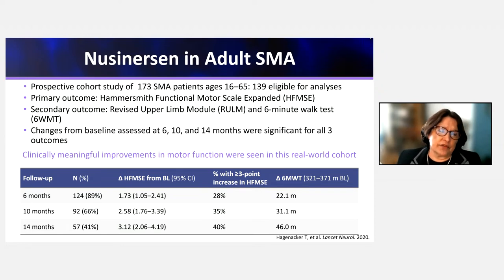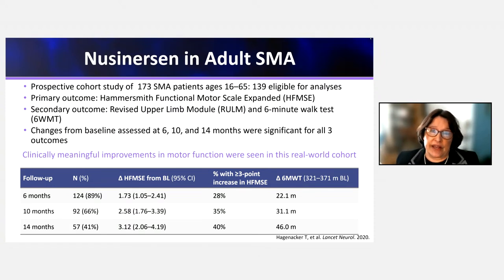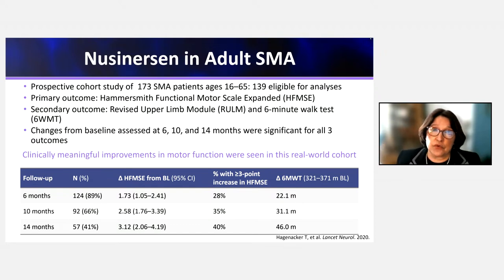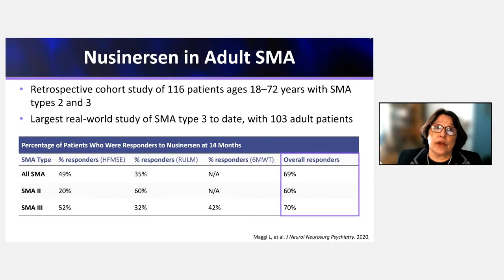The study showed a robust response: by 14 months, the change from baseline on the Hammersmith was over 3 points — clinically meaningful. Between 35 and 45% of patients had greater than 3-point improvement by 10–14 months. The 6-minute walk test improved by 22 to 46 meters, which is clinically significant.